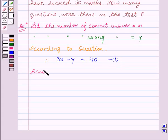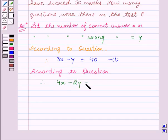Again from the question, we see that 4 marks for correct and minus 2 for wrong answers, Yash scored 50 marks. This can be written as 4X minus 2Y equal to 50, or it can be written as 2X minus Y equal to 25. This is our second equation.